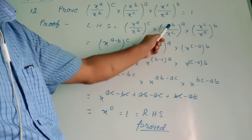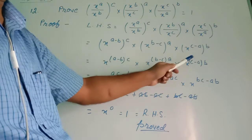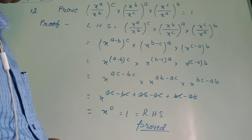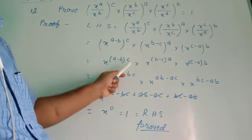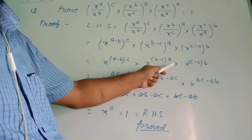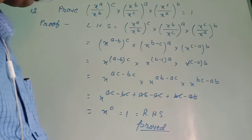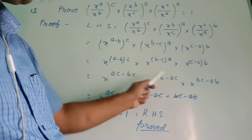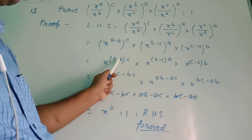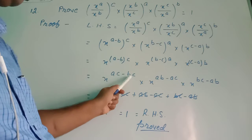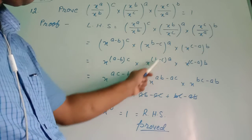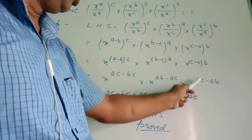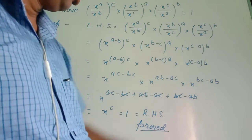Then I wrote x^(b-c) whole to the power a, into x^(c-a) whole to the power b. Now applying the power of a power rule: x to the power (a-b)c, into x to the power (b-c)a, into x to the power (c-a)b. Expanding: x to the power (ac - bc) into x to the power (ab - ac) into x to the power (bc - ab).